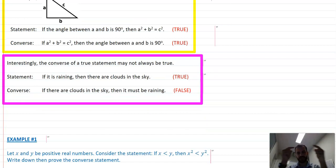Now, of course, if the implication does move both ways, then that might be useful because it might be easier to prove the converse than it is to prove the original statement. For example, let X and Y be positive real numbers. Consider the statement if X is less than Y, then X squared is less than Y squared. Write down, then prove the converse statement.